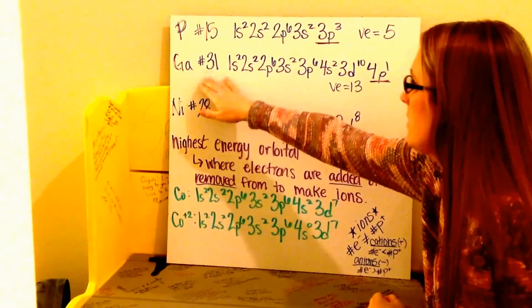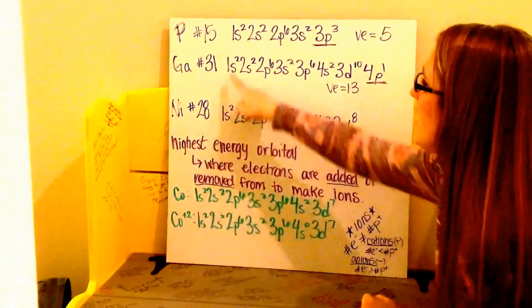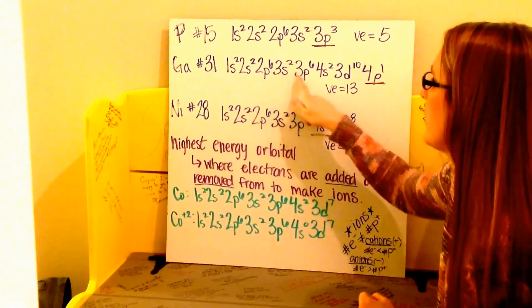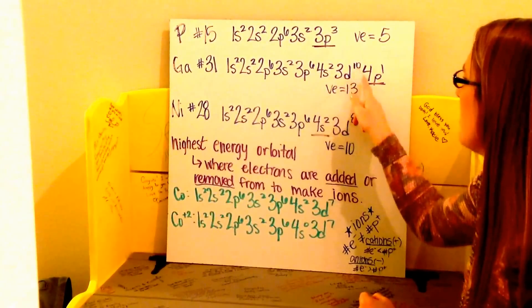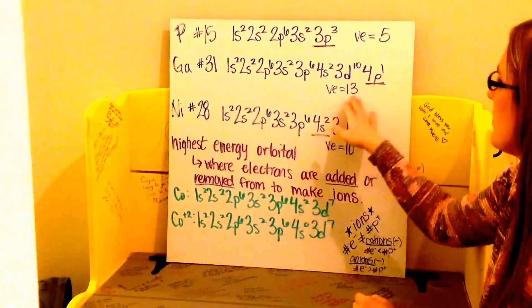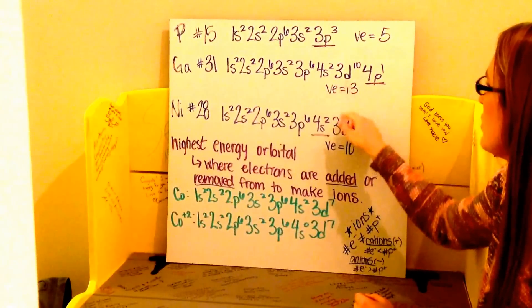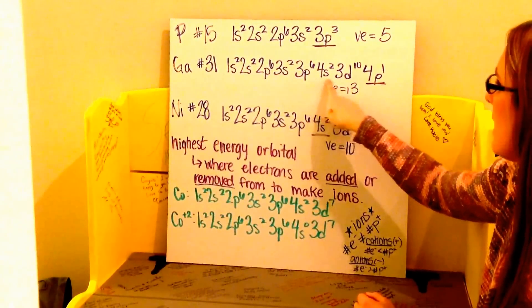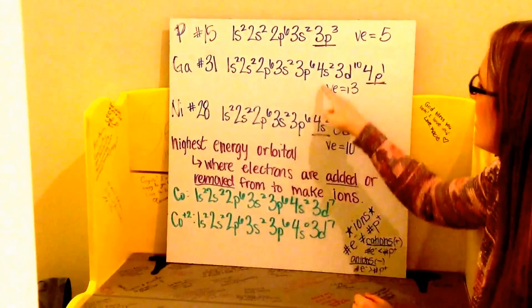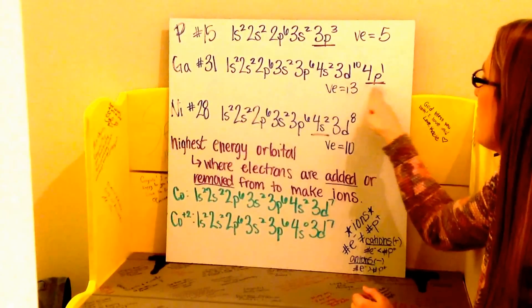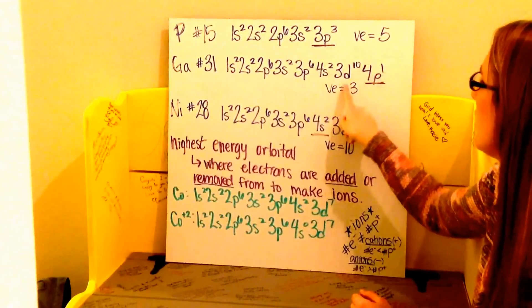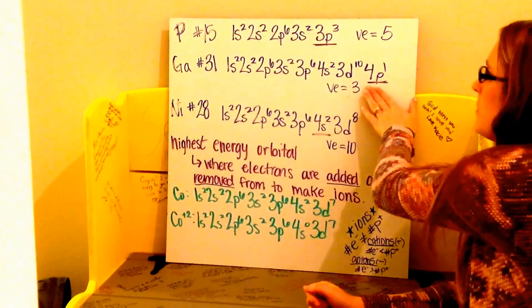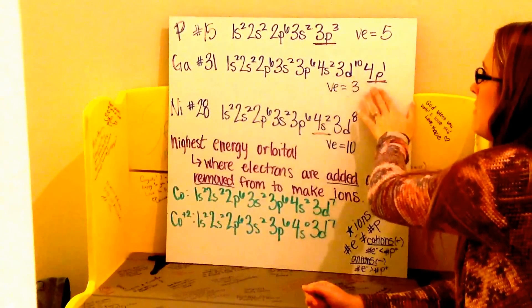Gallium is number 31 and has the electron configuration of 1s2, 2s2, 2p6, 3s2, 3p6, 4s2, 3d10, 4p1. My number of valence electrons — you might have thought was 13, which is 2 plus 10 plus 1. In fact, it is 3, because we only count electrons in my highest energy level. My highest energy level is 4, so that's the 4s2 and the 4p1 — 2 plus 1 is 3. These 3d electrons are at a lower energy level than my 4p electrons.